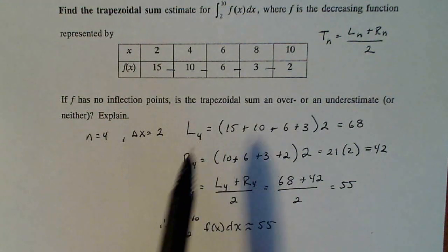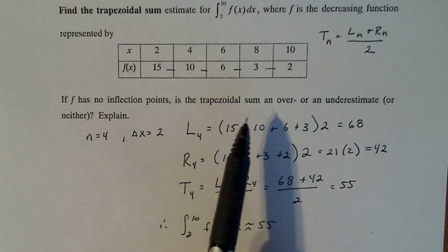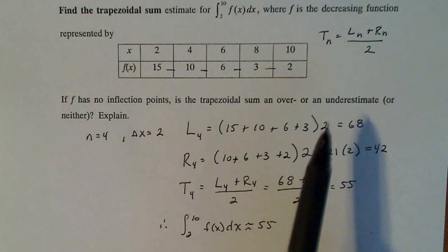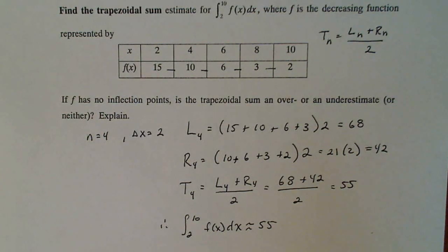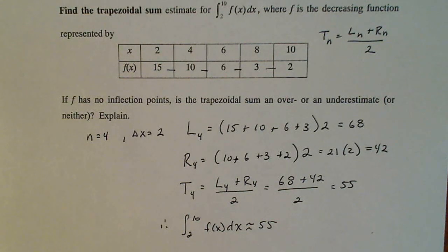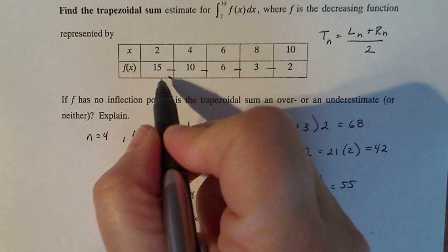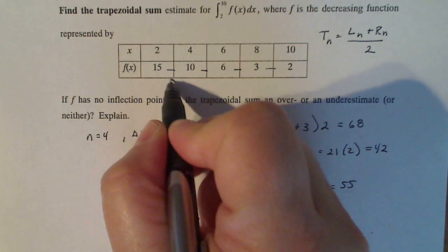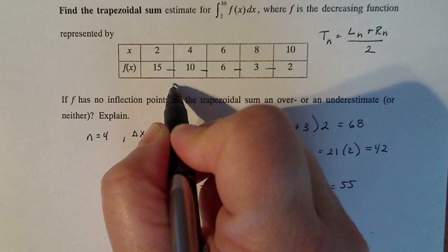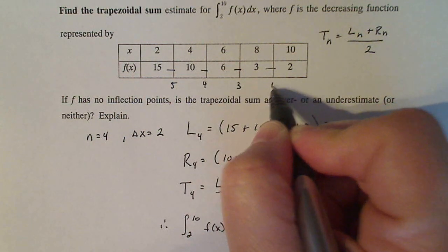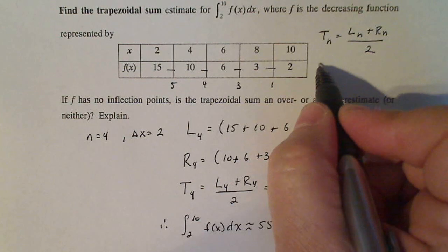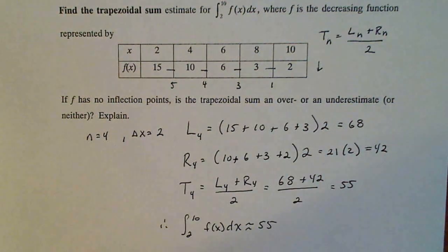Now for the last part: f has no inflection points, and we need to determine if the trapezoid sum is an overestimate or underestimate. Most students graph this, but graphing isn't an appropriate way to prove something. What you want to think about is the change in y's all the way across. The change in y here is five, then four, three, then one. So my function is decreasing, but my rate is actually increasing.